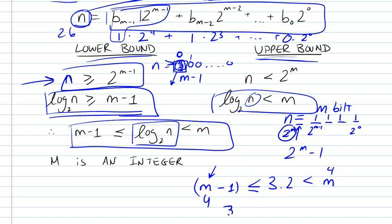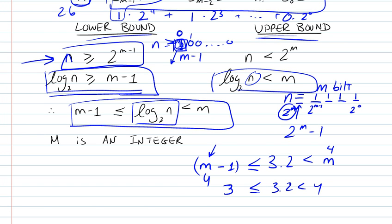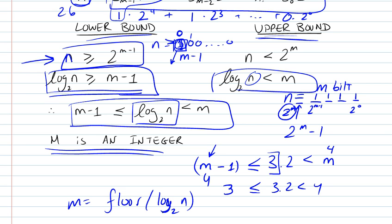We've found our m. m will be equal to the floor of log n base 2—the floor meaning just truncating it and taking the 3—plus 1.